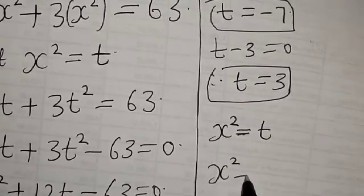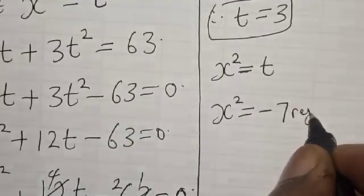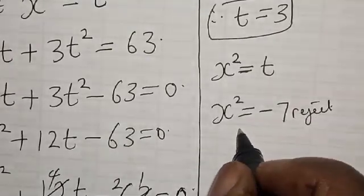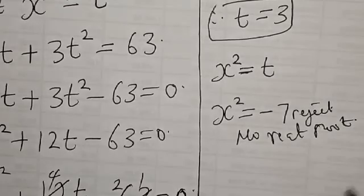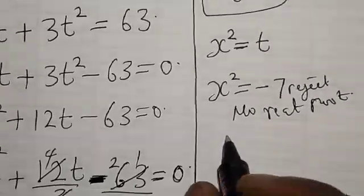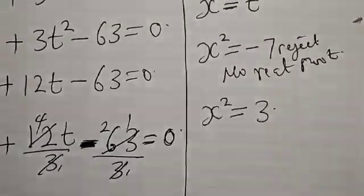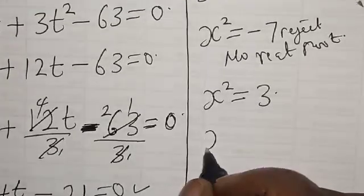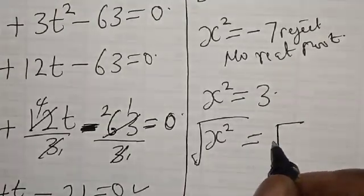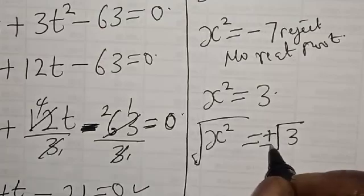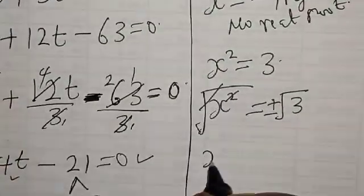Since x squared equals t, and t equals minus 7 gives x squared equals minus 7, we reject this because there is no real root. For t equals 3, we have x squared equals 3. Taking the square root of both sides, x is equal to plus or minus square root of 3.